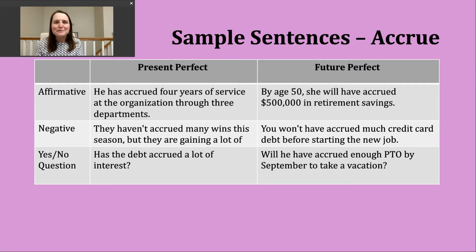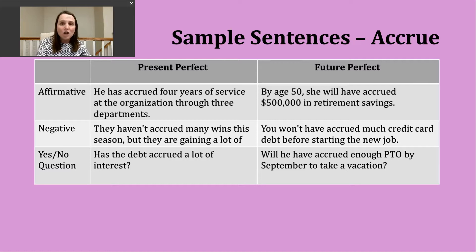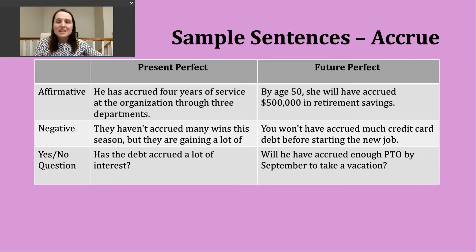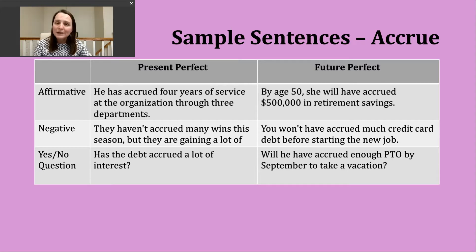For a negative future perfect sentence, the structure is: will + not + have + participle. Example: 'You won't have accrued much credit card debt before starting the new job.' Here, someone has a start date in mind in the future, and someone reviewing their financial records is noting that person will not have accumulated a lot of debt by that point.